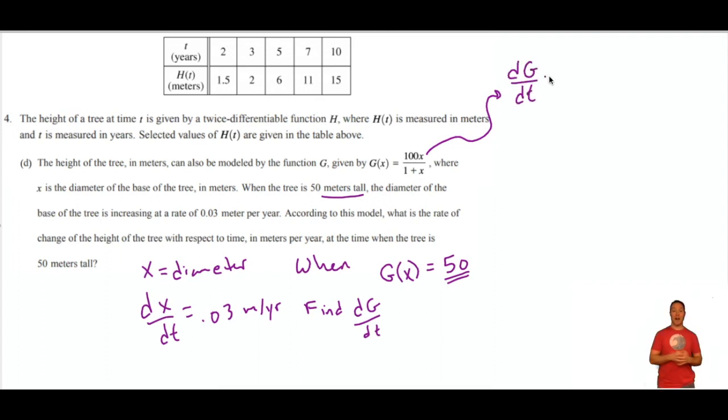All right. So dg dt, I'm going to have to use the quotient rule since this is a quotient. Low d high minus high d low over low low. I like to yodel it. Low d high minus high d low all over low low because yolo. Okay. So here I am doing it. 1 plus x times the derivative of the top is 100 times dx dt. Remember, that's the chain rule. X is a function of time also. Minus 100x times dx dt all over 1 plus x squared. That's low low.